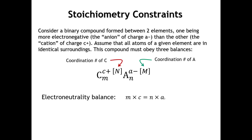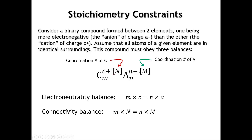Something you may not have thought about is what's called a connectivity balance. In these crystal chemical formulas, we use a superscripted number in square brackets — capital N — to represent the coordination number of atom C, and capital M for the coordination number of atom A. The number of cations in the empirical formula times its coordination number must equal the number of anions in the empirical formula times its coordination number.